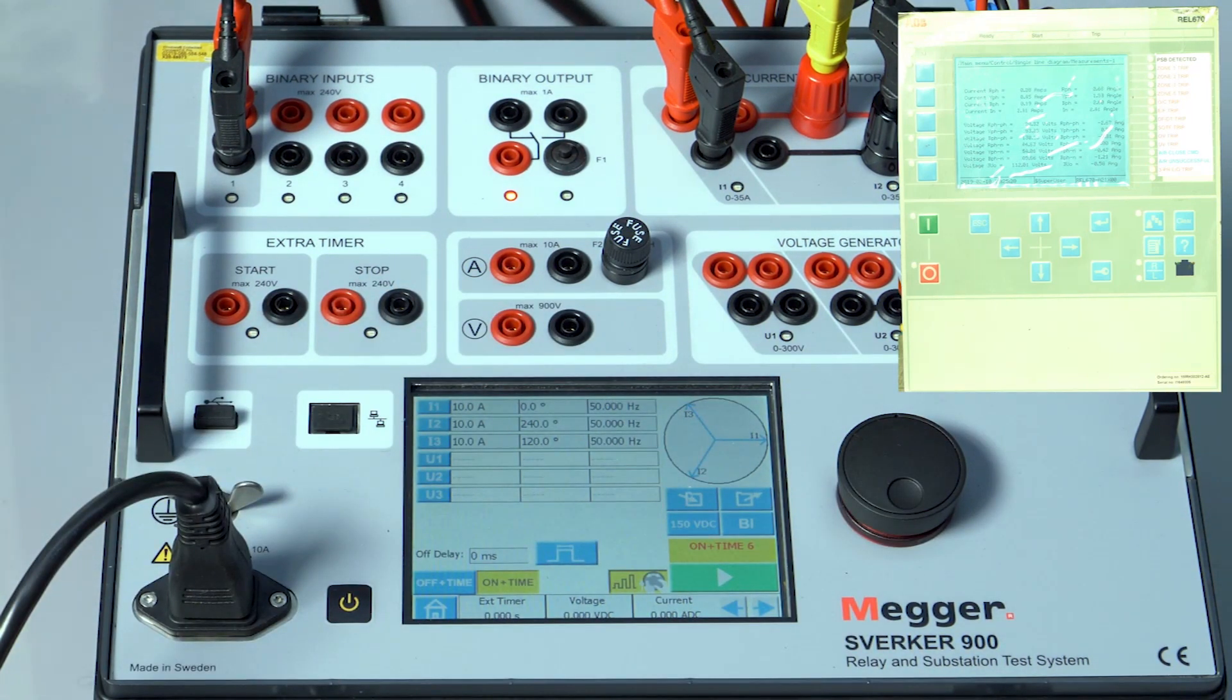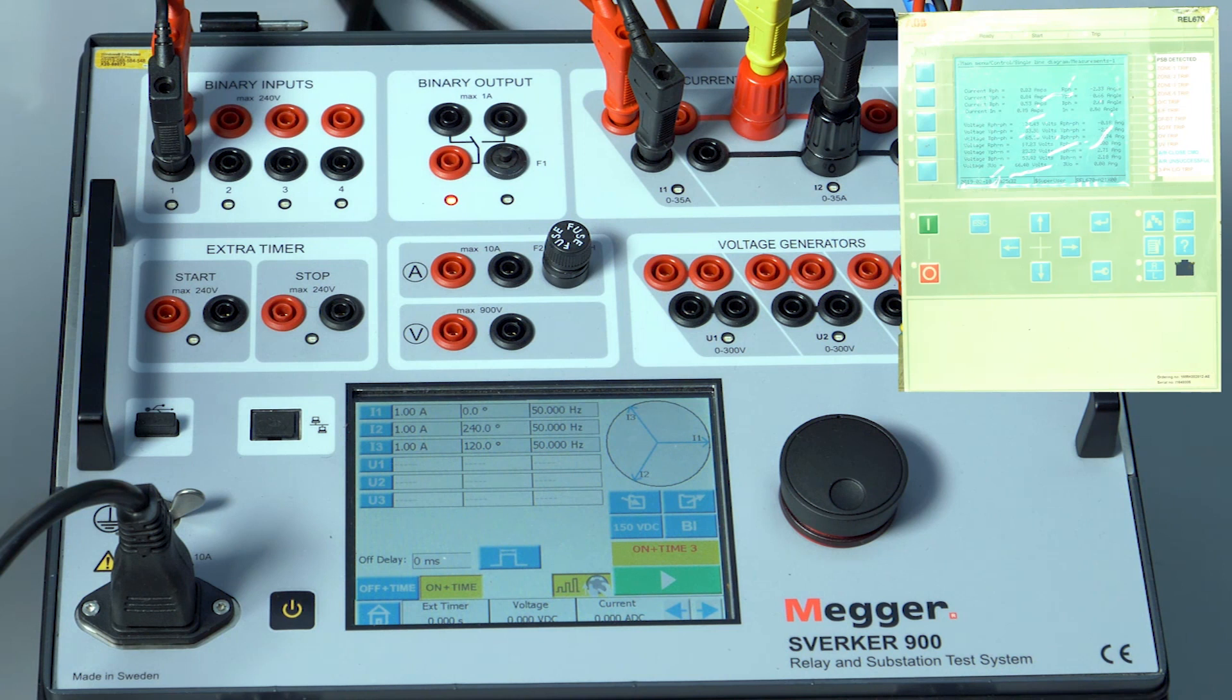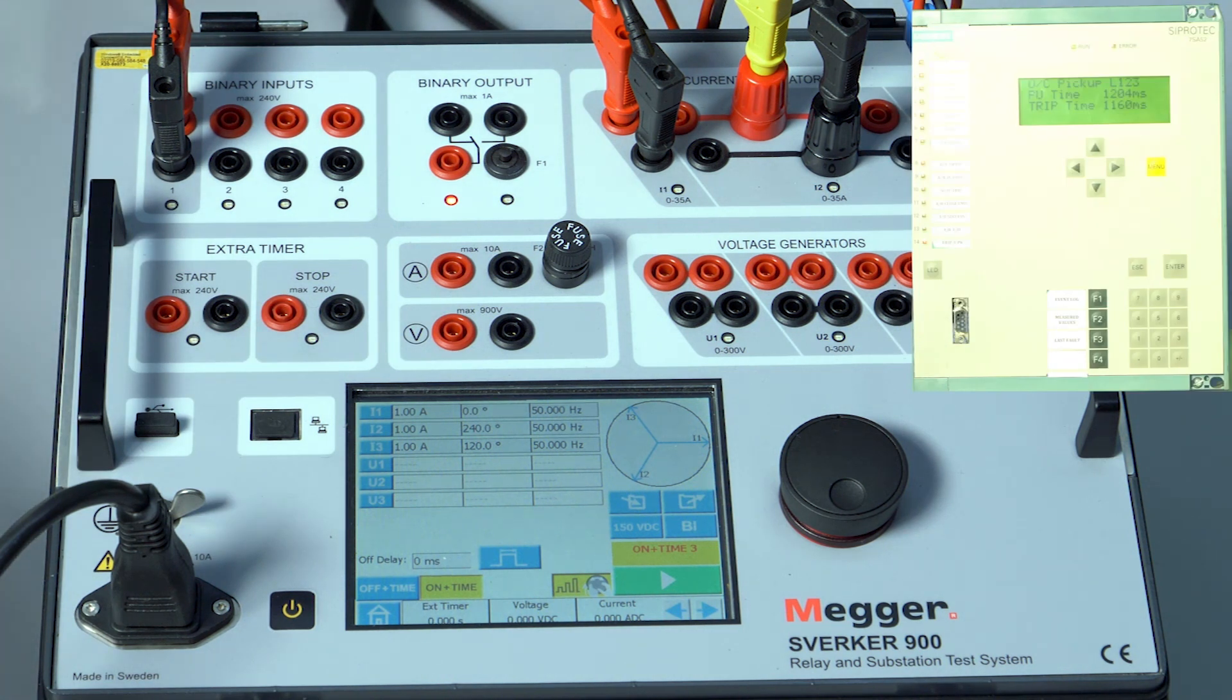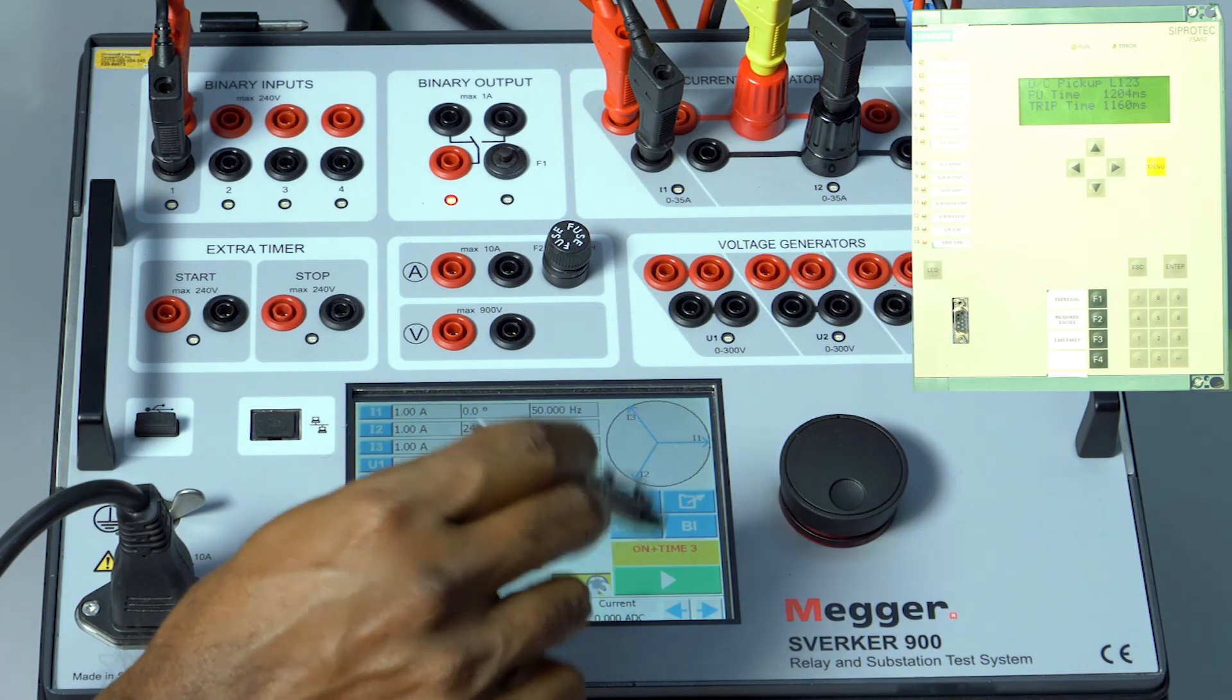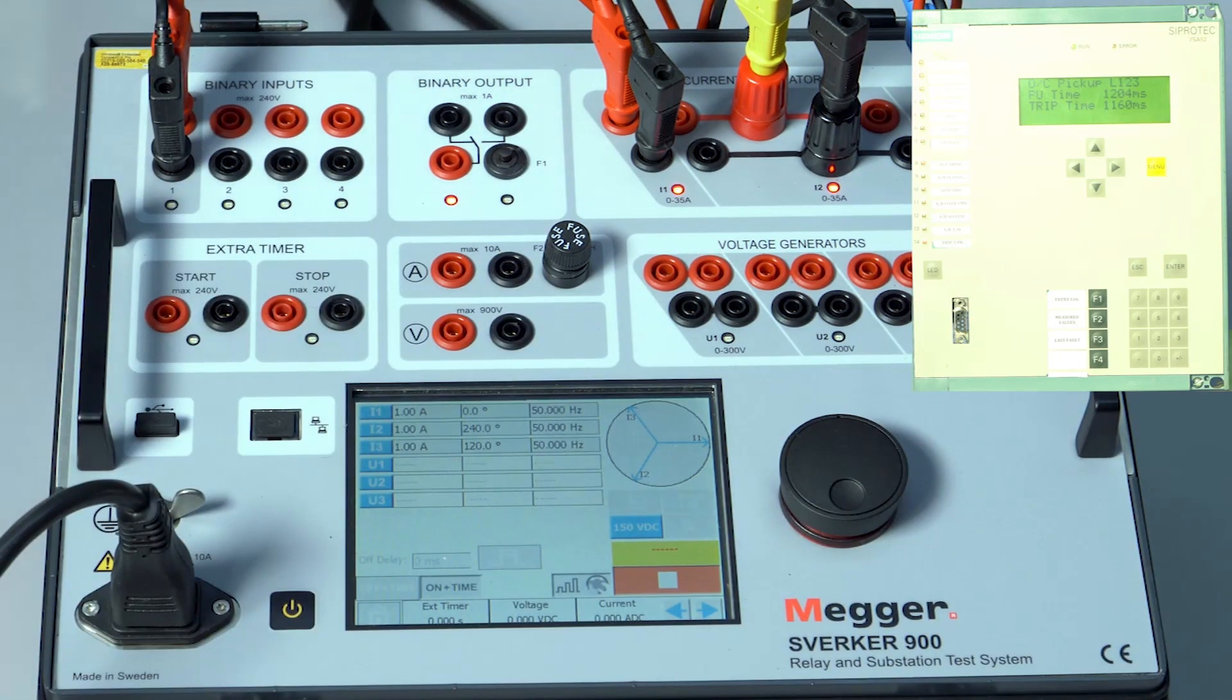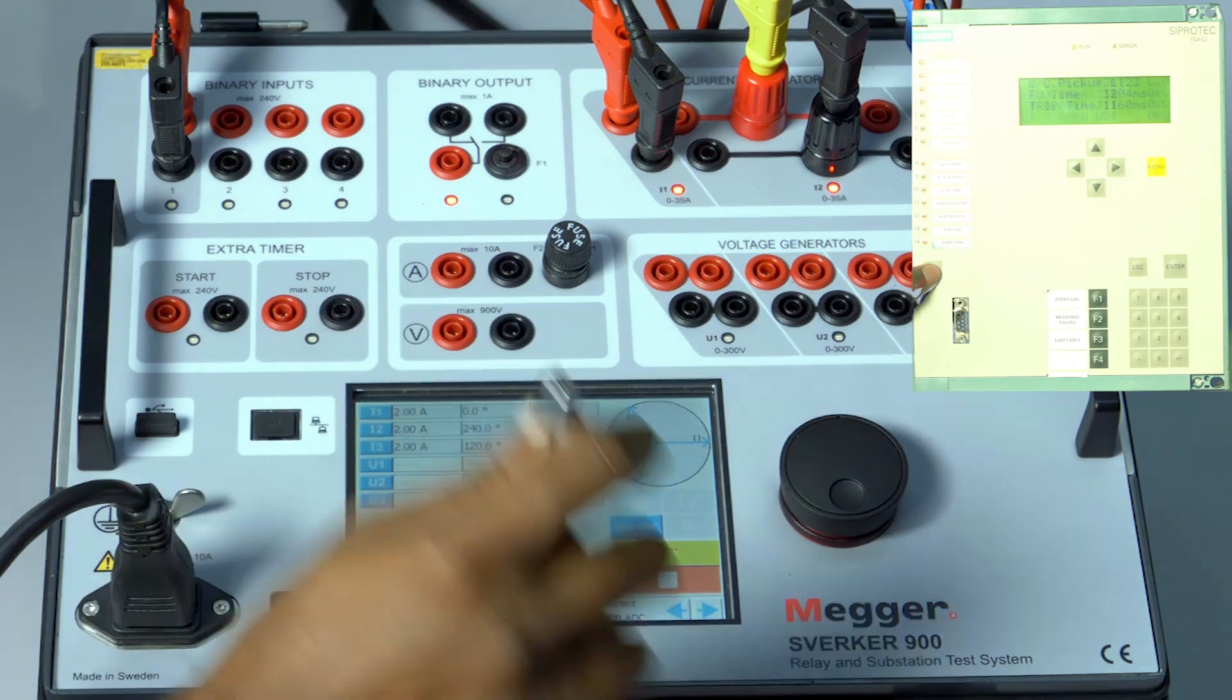IDMT automatic plotting multiple timing test curve ABB and Siemens relays part two. Now let us test the Siemens relay. IDMT curve is enabled in Siemens relay. Using the same option, I'm going to inject by pressing the play button. Now let me inject two amps in all the phases. Now press the button to inject. The relay has operated in three point nine eight four seconds.